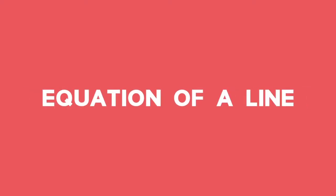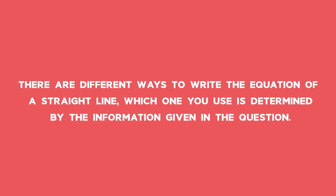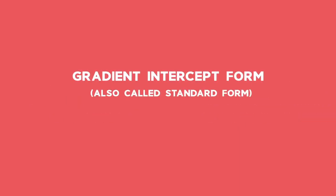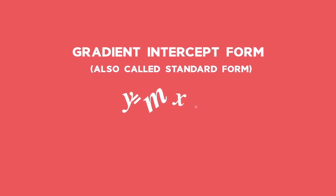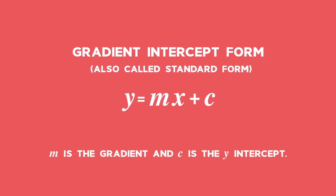The equation of a straight line can be written in different ways. Which one you use is determined by the information given in the question. The first one is the gradient-intercept form, also called the standard form of a straight line: y equals mx plus c, where m is the gradient and c is the y-intercept.